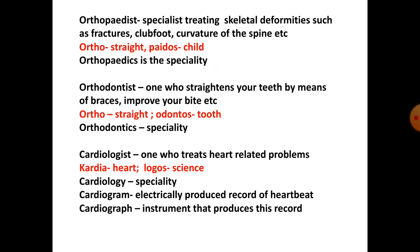Next we have orthodontist. Agar daat se related koi bhi problem ho jati hai — daat mein braces lagwane hote hain — toh us case mein hum us doctor ke paas jate hain. Usse hum kehte hain orthodontist. Bug teeth ki koi problem hai, hum phir orthodontist ke paas jate hain. Yeh do root words se milkar bana hai: ortho meaning straight, and odontos meaning tooth. Yaani ki straightening of tooth. Aur jo specialty hai usse hum kehte hain orthodontics. Agar hum S hata dein, yaani ki orthodontic, toh yeh ho jaayega ek adjective.